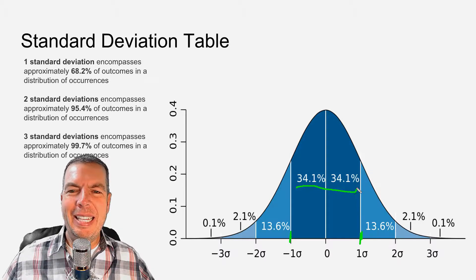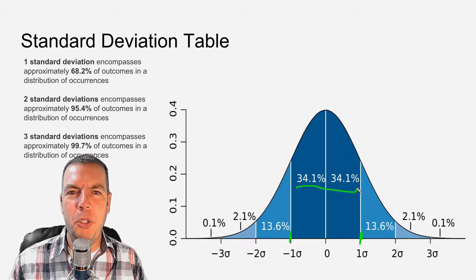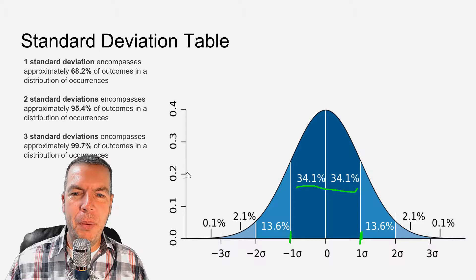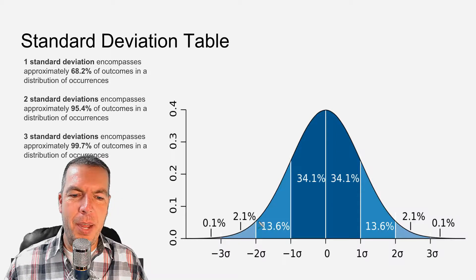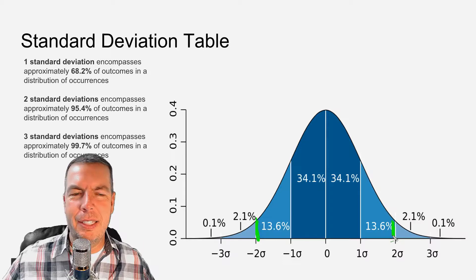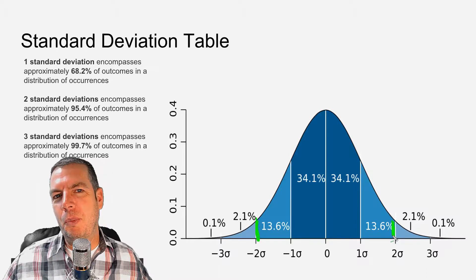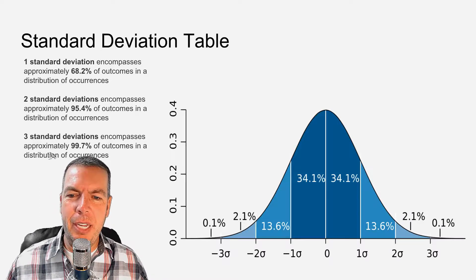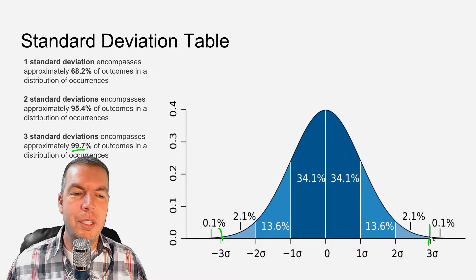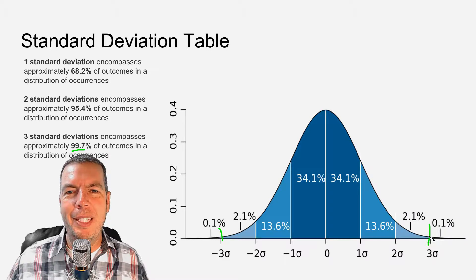So a one standard deviation is going to encompass 68.2% of all the data that's collected. If we go out to the two standard deviation line, that's going to encapture 95.4% of all data. That makes sense — the farther we go out from that mean, the more data it captures. And if we go out to three standard deviations, that's going to capture about 99.7% of all inputs. The farther we go out, the most of the inputs are going to fall within that range.